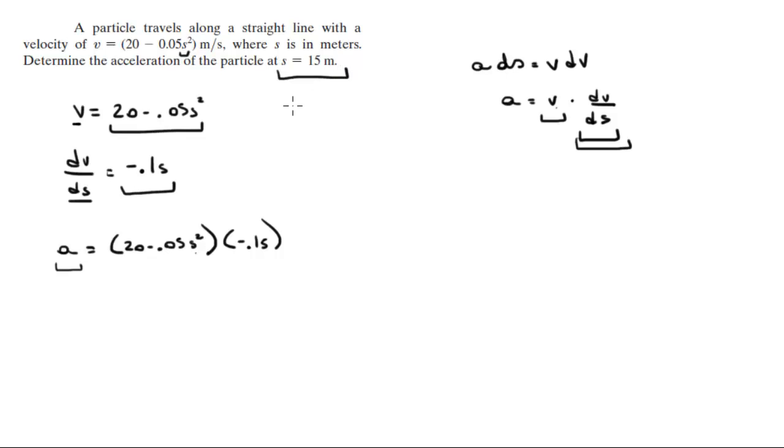So all you got to do is plug in s for this 15 here and this s right here and you solve for the acceleration. And you get that the acceleration when s is 15 is equal to negative 13.125 meters per second squared. Final answer.